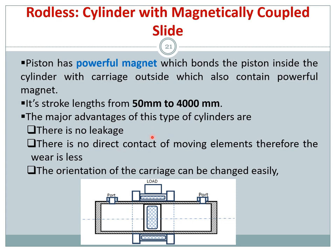Since it is a double acting cylinder, when compressed air enters one port, it pushes the internal magnet and carriage to one side; when air enters the other port, the carriage moves the opposite way. That concludes the lecture on pneumatic actuators — thank you and have a nice day.